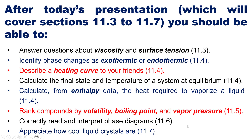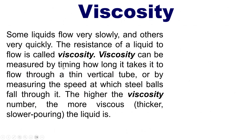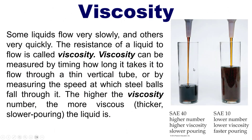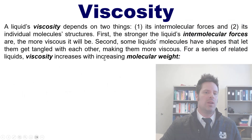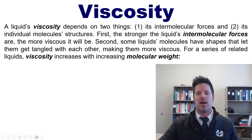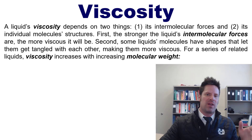There's a lot to cover, so let's get into it, beginning with viscosity. Some liquids flow very slowly while others flow very quickly. The resistance of a liquid to flow is called its viscosity. Viscosity can be measured by timing how long it takes to flow through a thin vertical tube, or by measuring the speed at which steel balls fall through it. The higher the viscosity number, the more viscous, or thicker, or slower the liquid is.